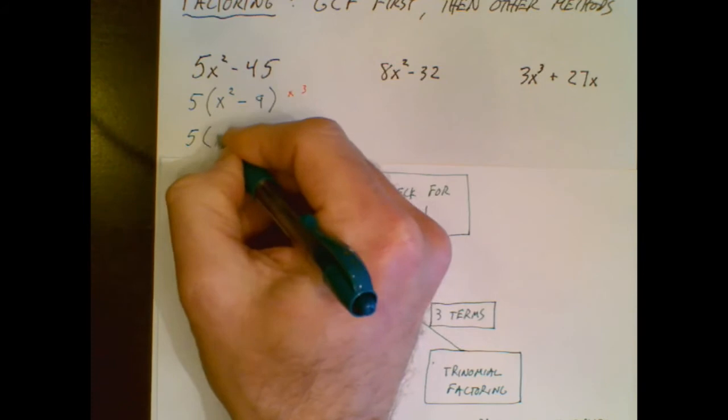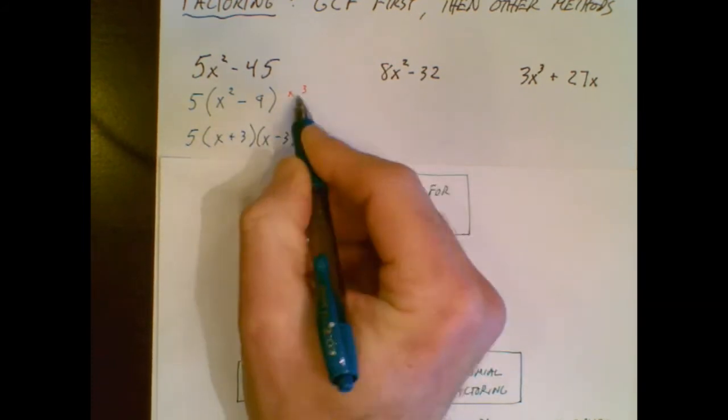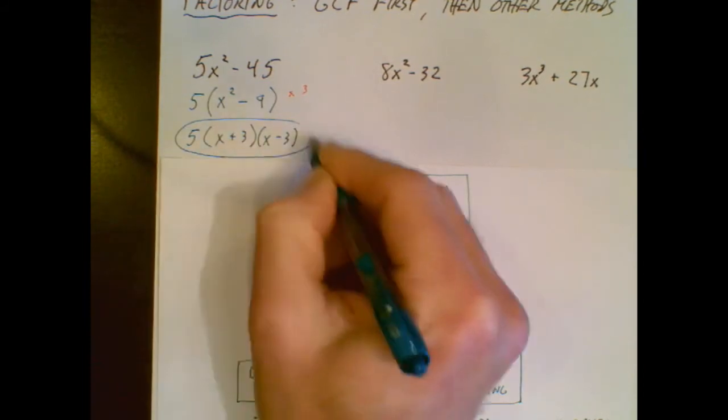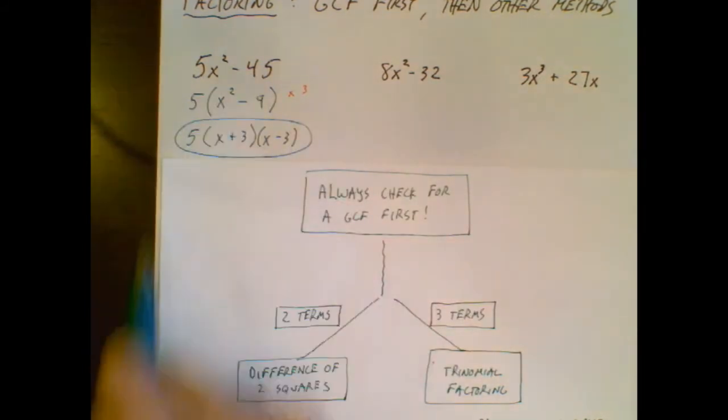So with those two pieces in place, I can just follow that factoring pattern. The GCF stays and the difference of two squares pattern, the x and the 3, and I'm done.